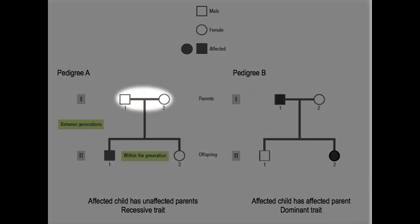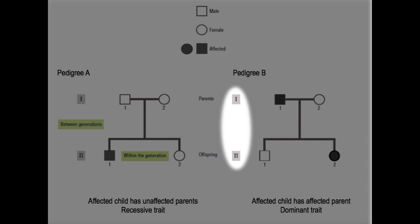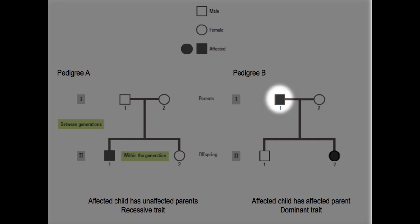A horizontal line connecting two individuals is a mating or a couple, and a vertical line indicates a generation and the resulting offspring or children of the couple. The generations are numbered along the left of the pedigree using Roman numerals. Individuals within each generation are assigned Arabic numerals shown under each symbol.